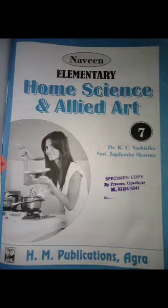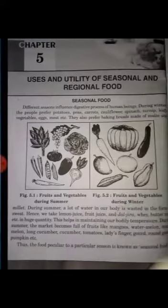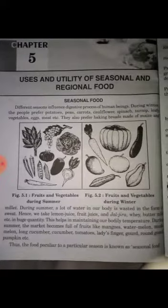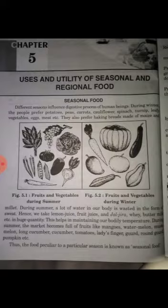Good morning students. Welcome once again to online classes. This is class 7 Home Science, and I am going to start chapter number 5: Use and utility of seasonal and regional food.